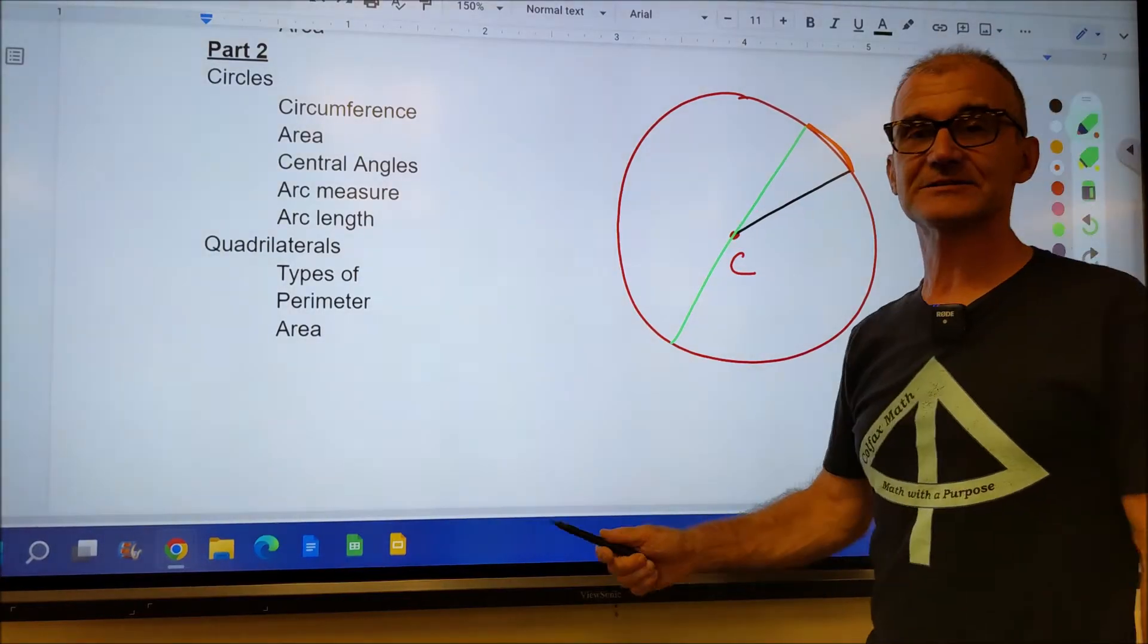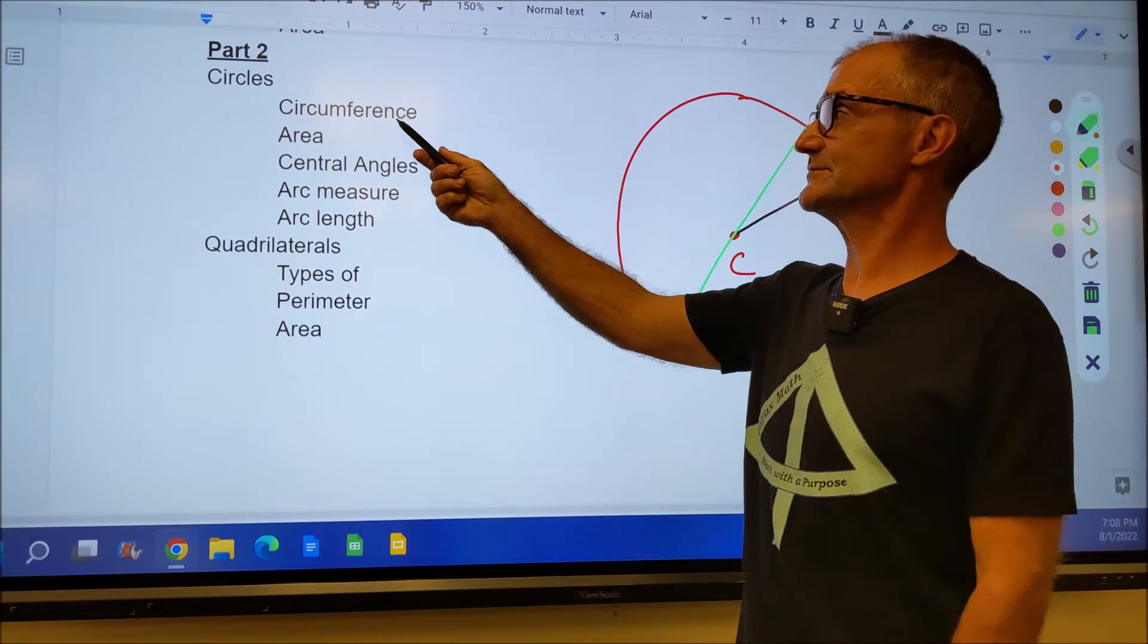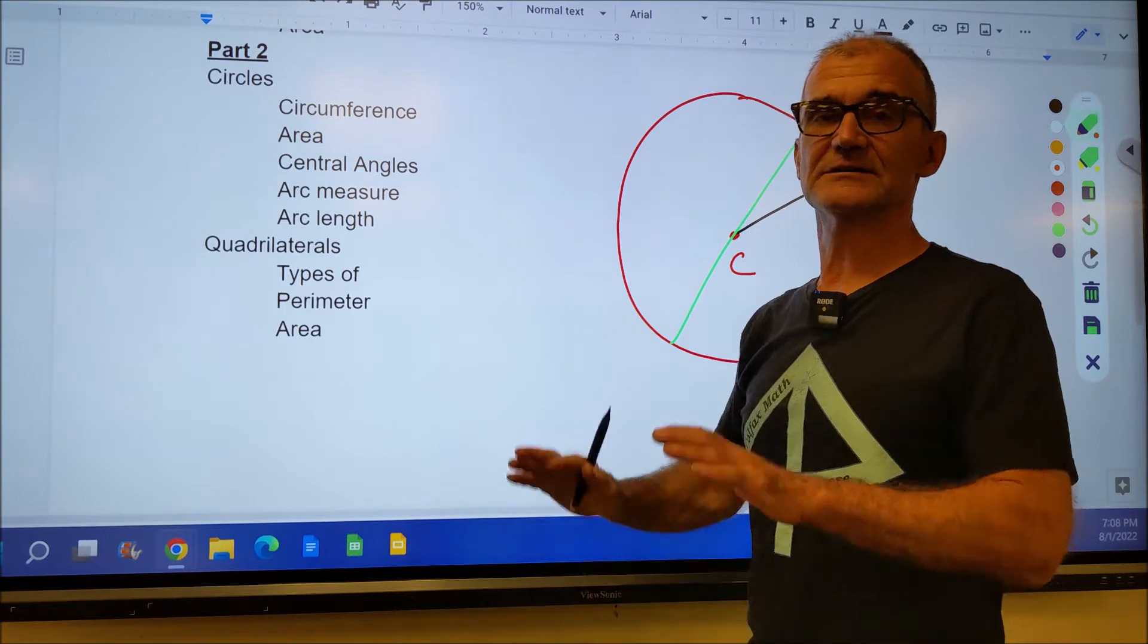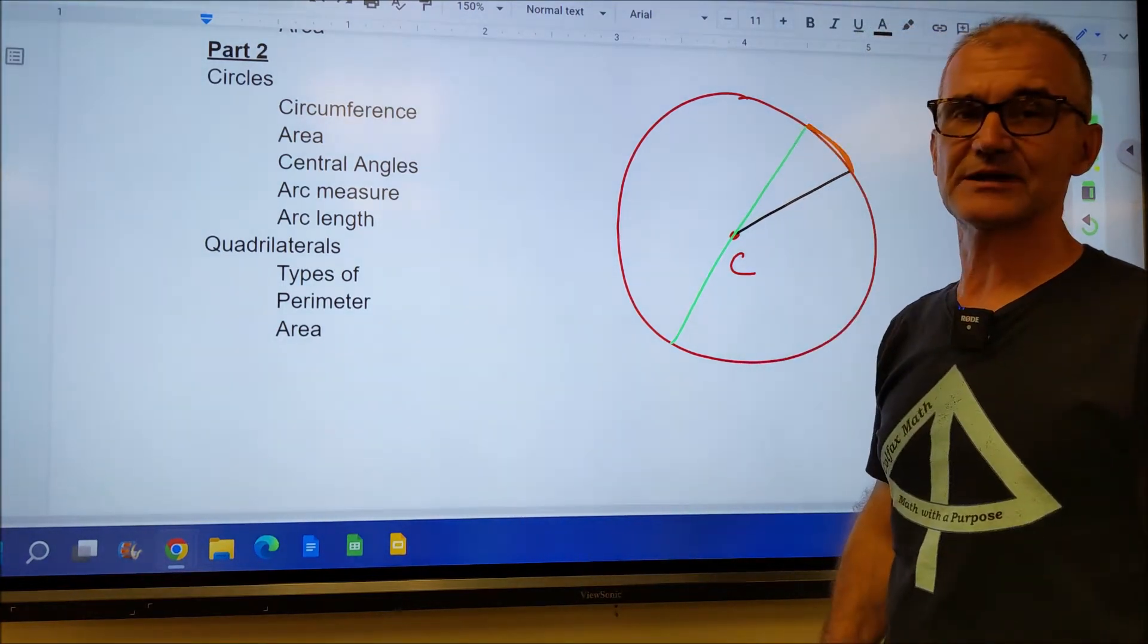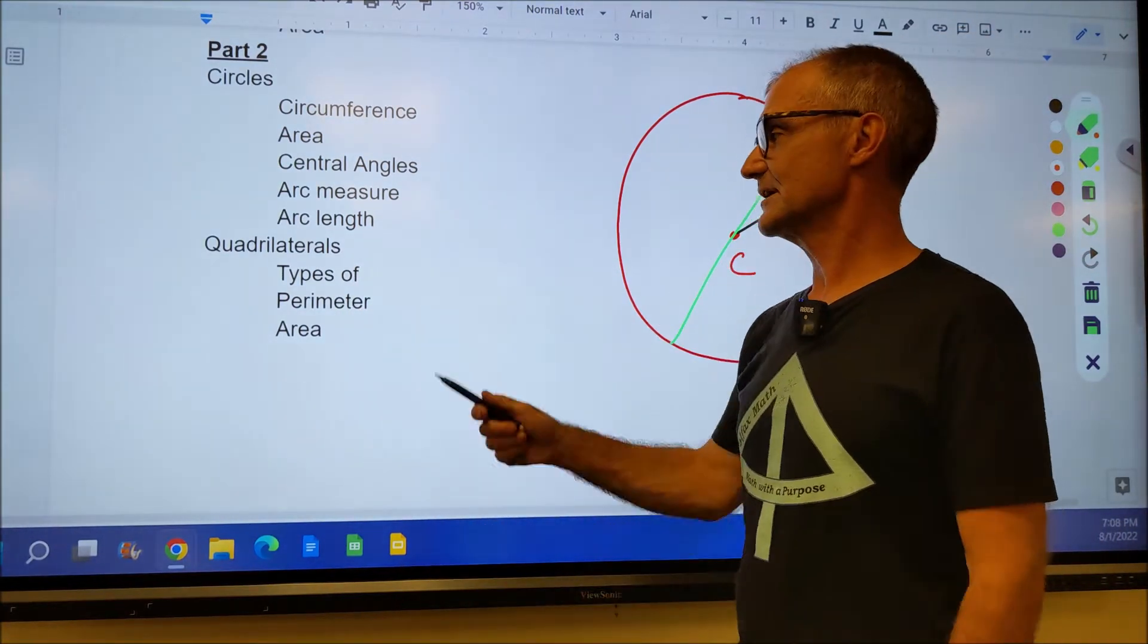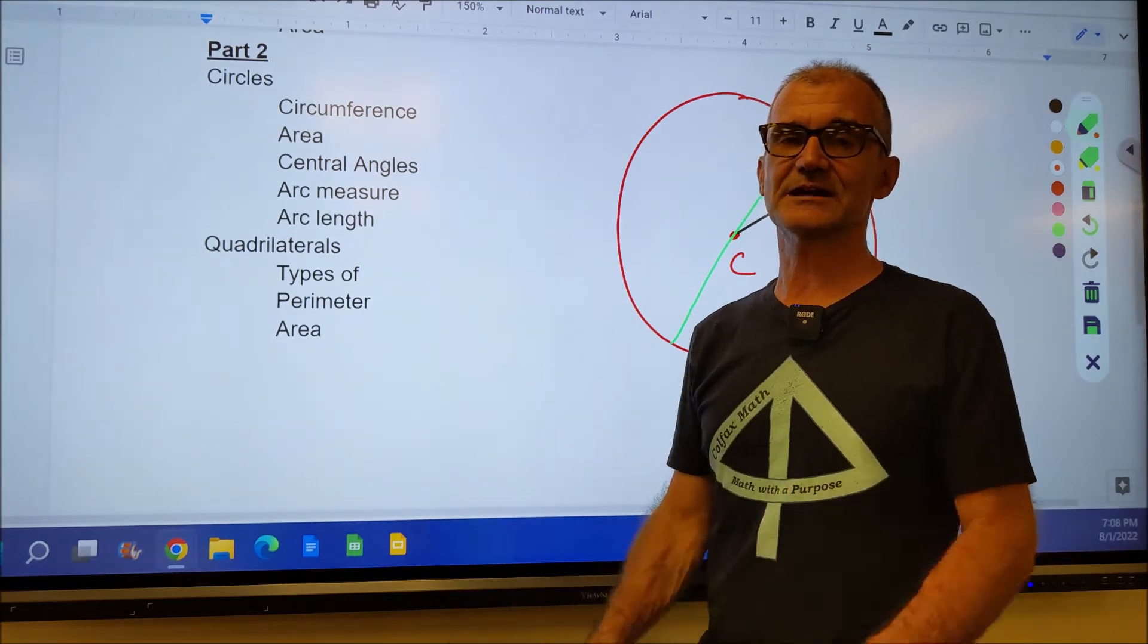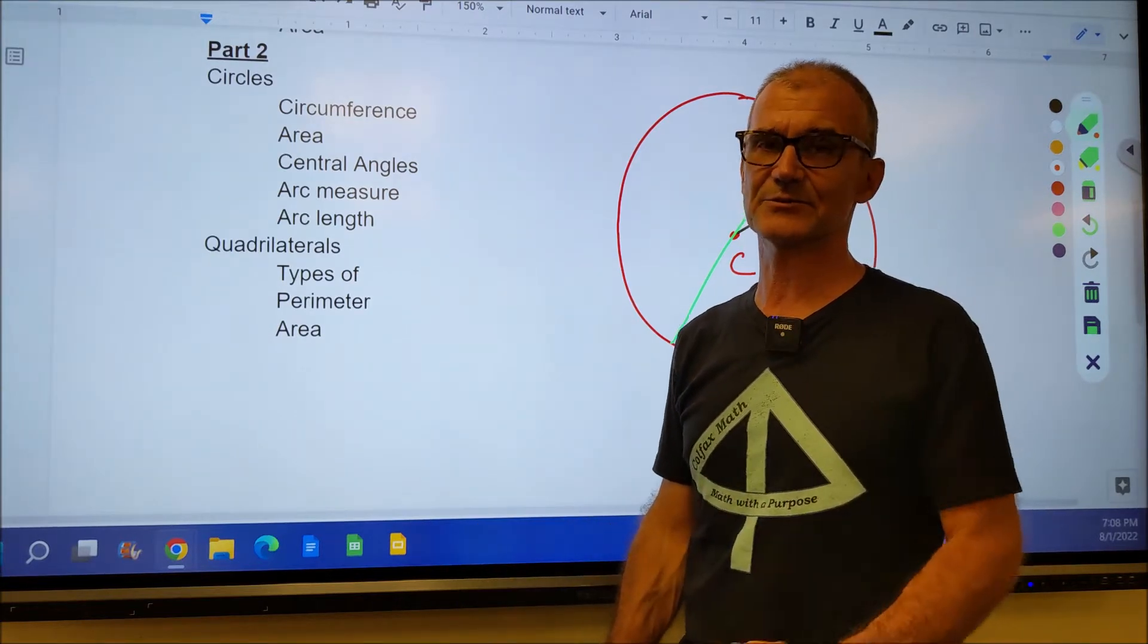In this video chapter 15, a second part of geometry, we're going to be talking about circumference of a circle, area, central angles, arc measure, arc length, just the different parts of circle, and how to answer some of those standardized math problems on circles. Then we're going to move on to quadrilaterals, four-sided figures, the different types, how to find perimeter and area.